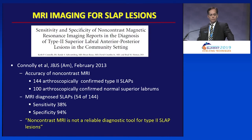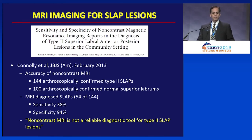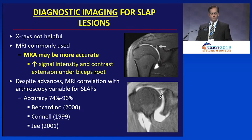We know that MRI is not particularly helpful either. This JBJS article concluded that non-contrast MRI is not a reliable diagnostic tool for type 2 SLAP lesions. X-rays aren't helpful, and MRI may give us a little more information, but it's equivocal often as well.